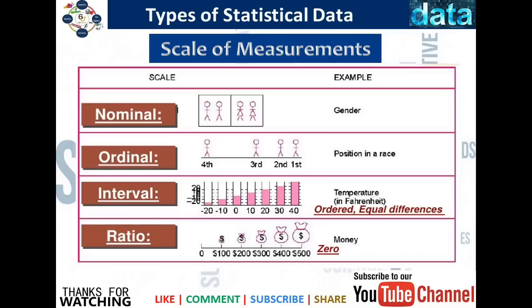Let's look at another example of different scales of measurement: nominal, ordinal, interval, and ratio. For ratio, the perfect example is money — because we have a true zero: zero dollars, one hundred dollars, two hundred dollars, and so on. For interval, the example would be temperature — it is ordered but doesn't have a true zero. Ordinal would be finishing position in a race: first, second, or third — but there is no standardized interval between positions. And nominal would be gender: male or female.